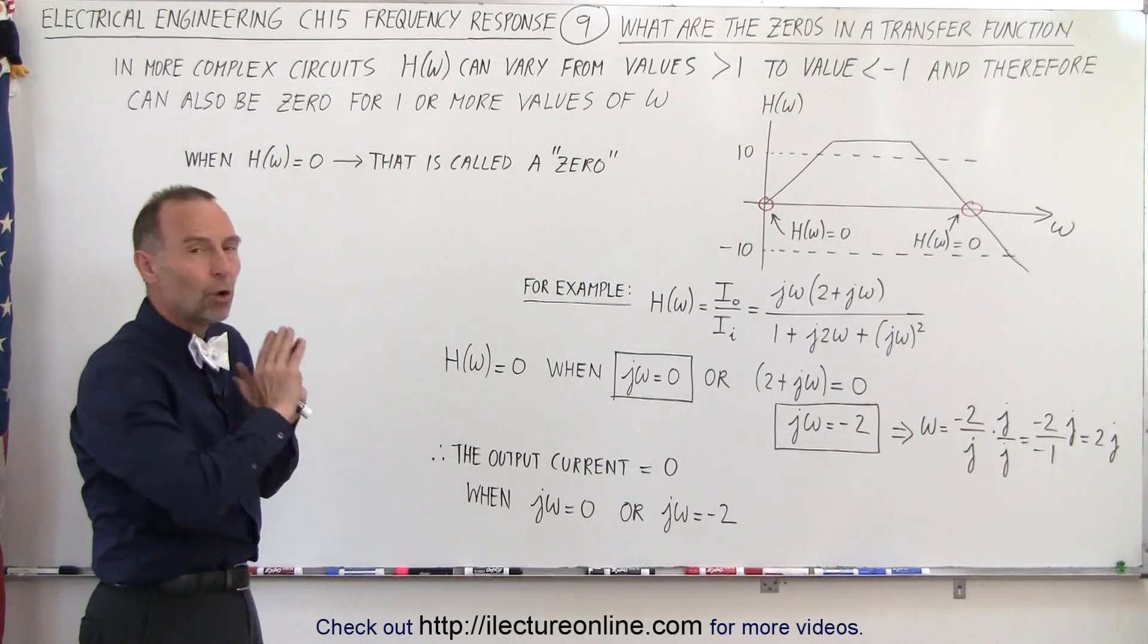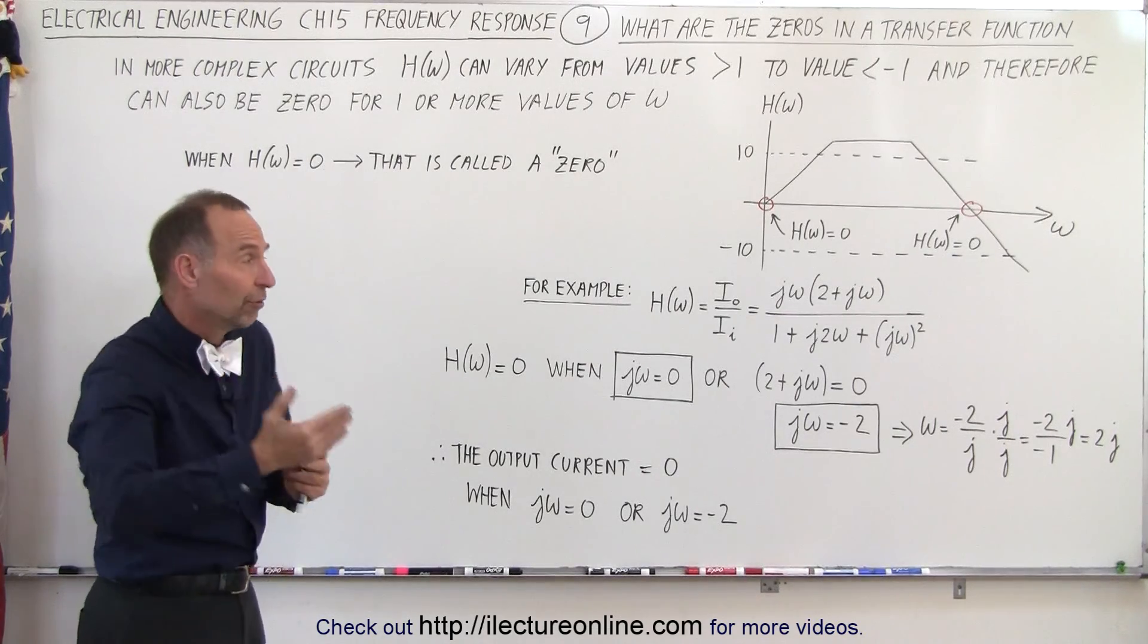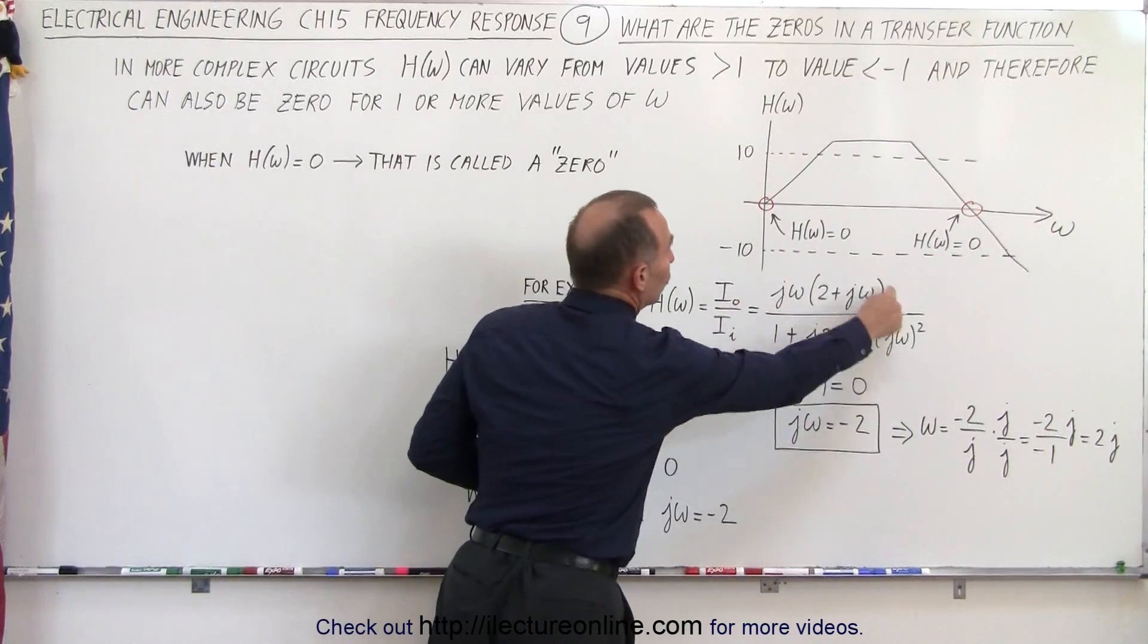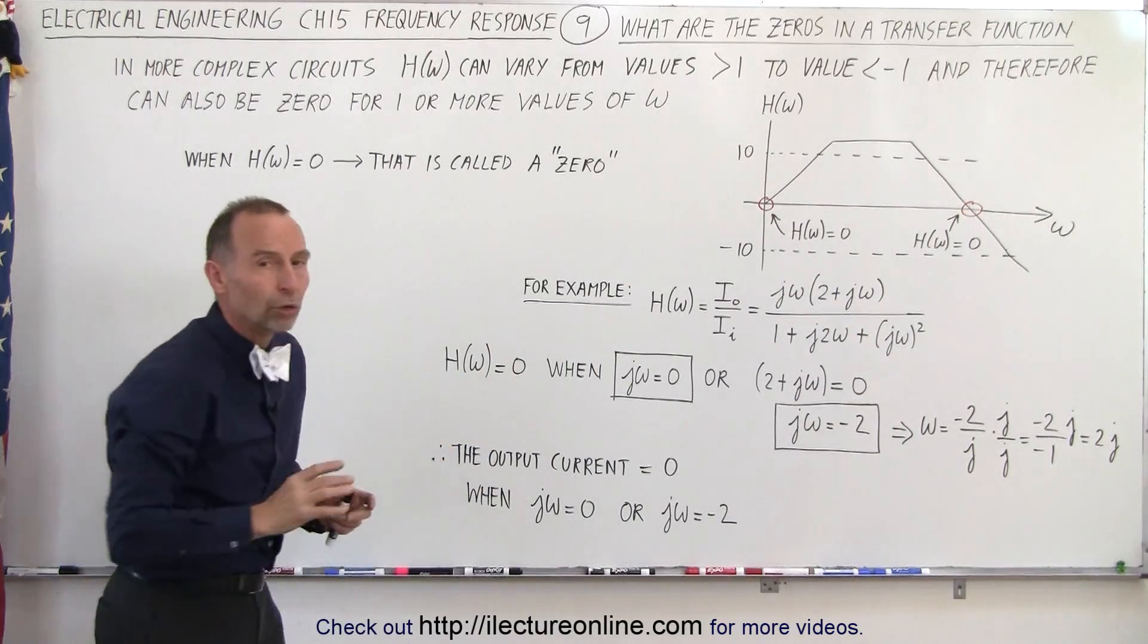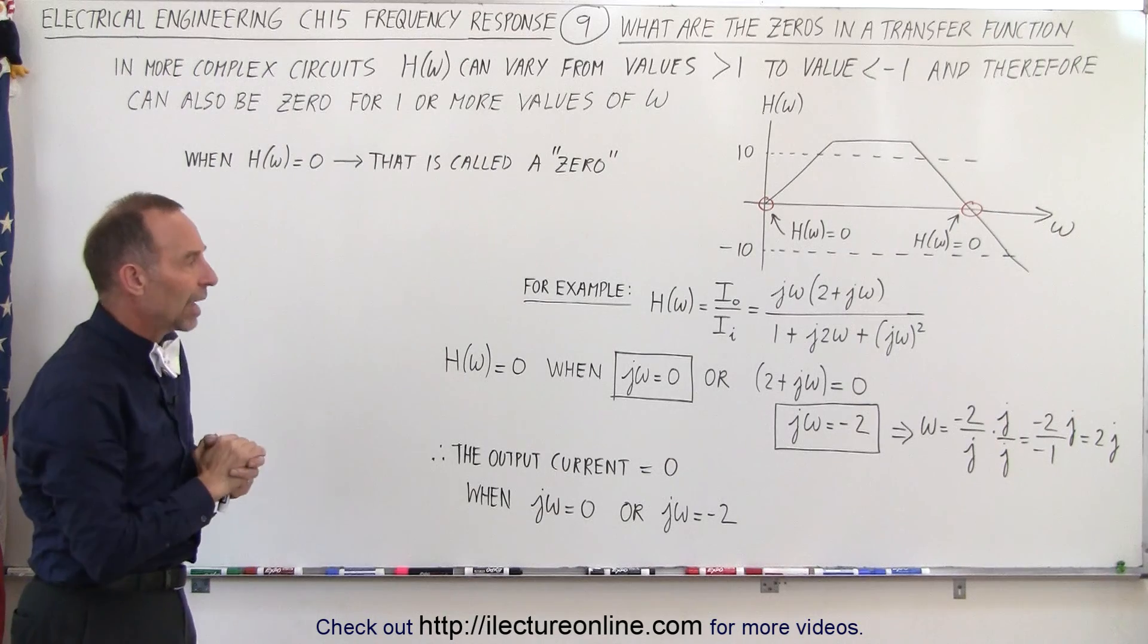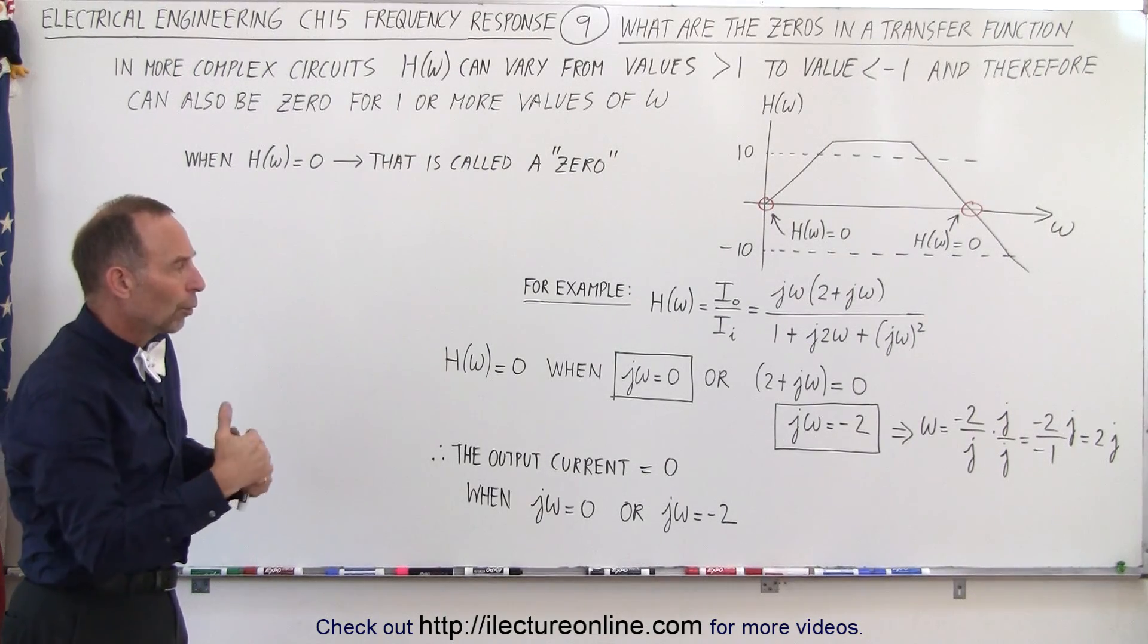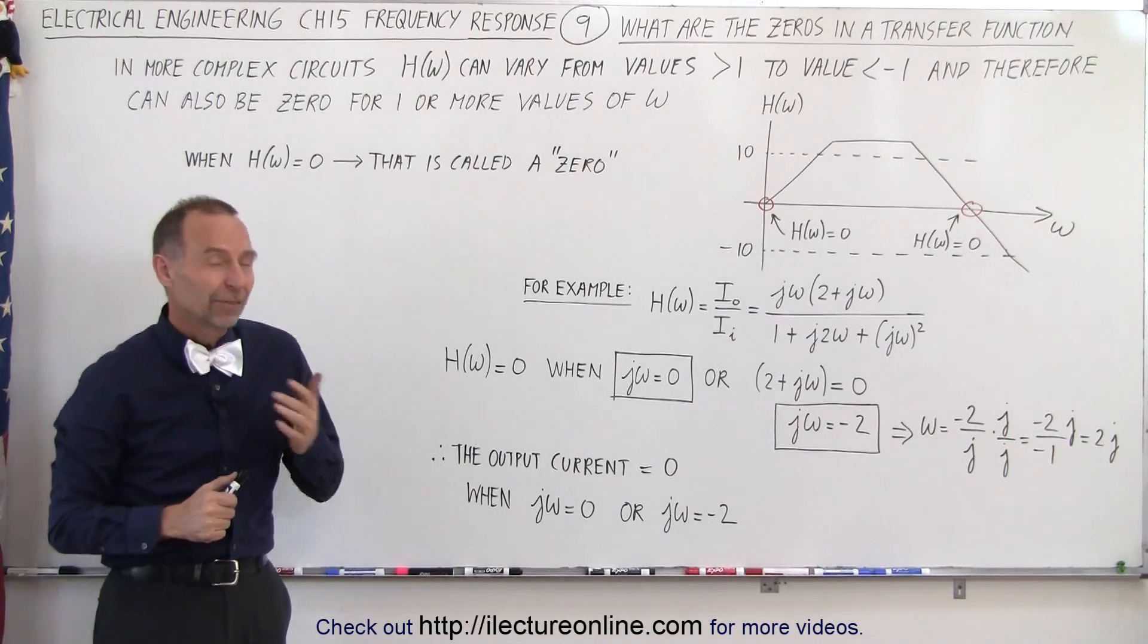But at least at this point, all you need to realize is that yes, there will be certain frequencies for which the transfer function will equal 0, which means whatever makes the numerator of this transfer function 0, that will then be called the zeros, the locations on the frequency axis where the frequency response will be, or where the transfer function will be equal to 0. And that is how we know.